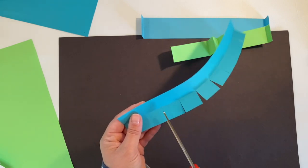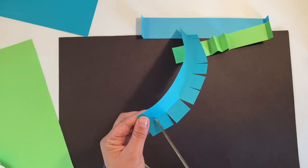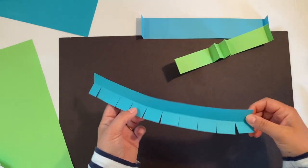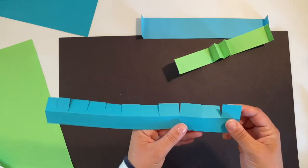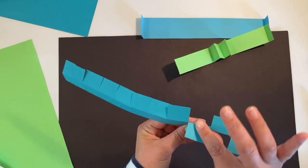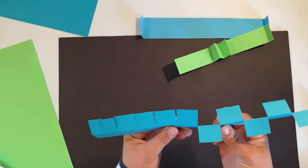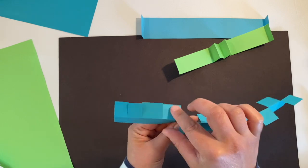Once you've made all your cuts, you're going to alternate and fold one to the top, one to the bottom, all the way until the end of your stripe. And that's why we call it the tabs.